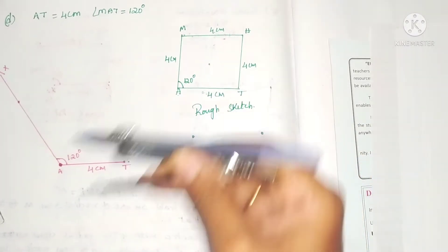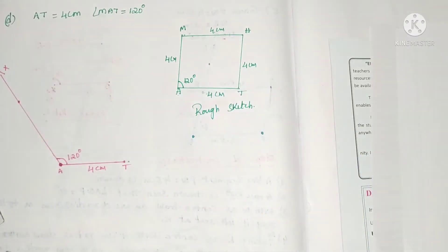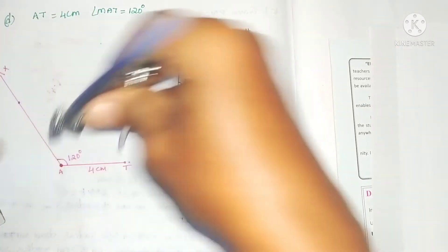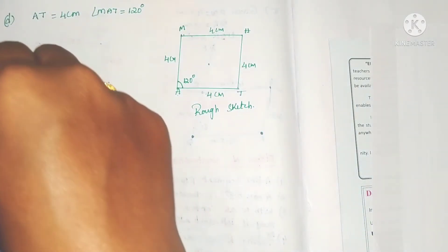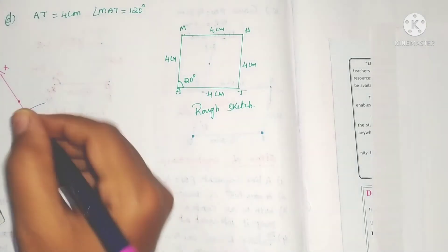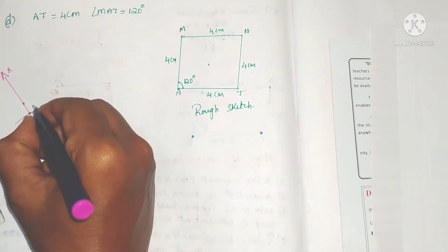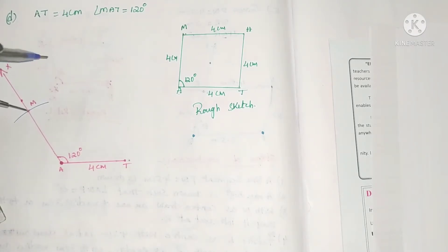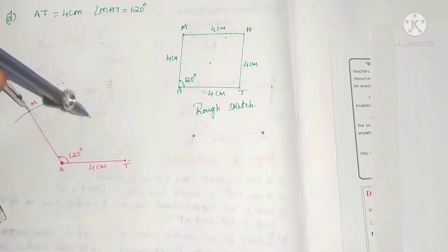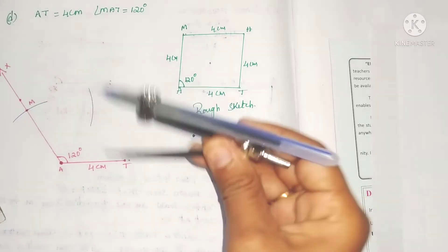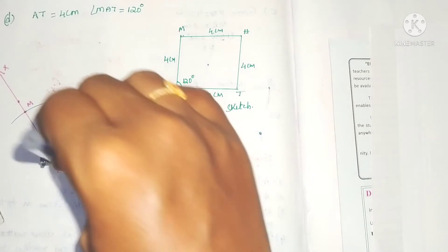With 4 centimeters radius, draw an arc. The point of intersection is M. With the same radius and M as center, draw another arc. Make sure your compass is not disturbed, otherwise the construction will be wrong.